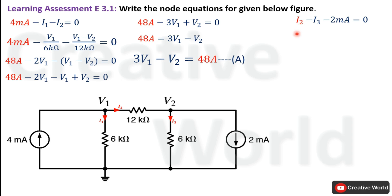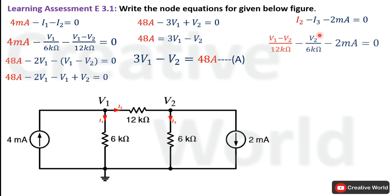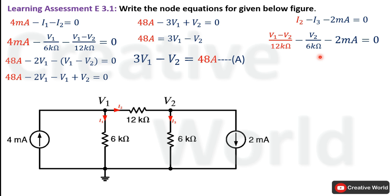We replace the currents with their equations. Current I2 equals (V1 − V2) divided by 12 kΩ as calculated previously, and current I3 equals the voltage across the 6 kΩ resistance, which is V2, so I3 = V2/6 kΩ. We then modify the equation by substituting these expressions.